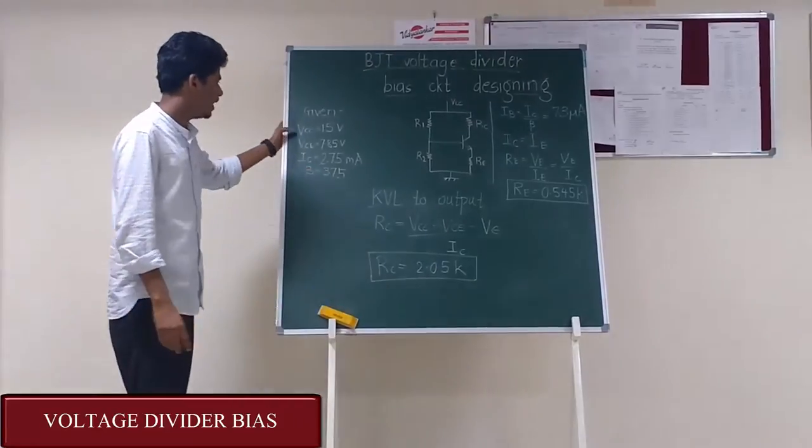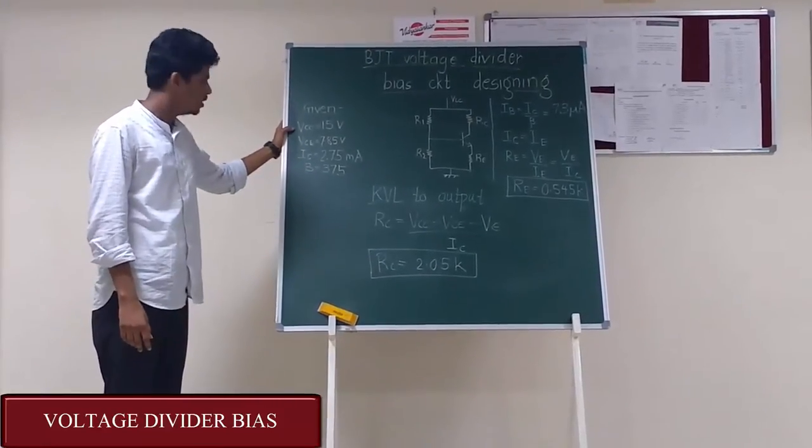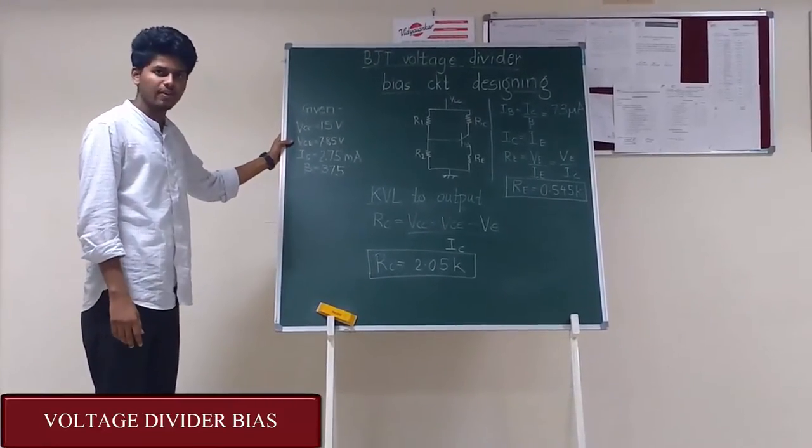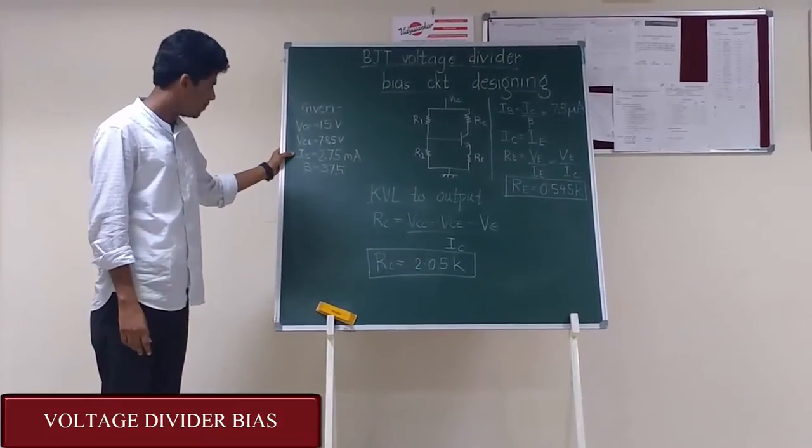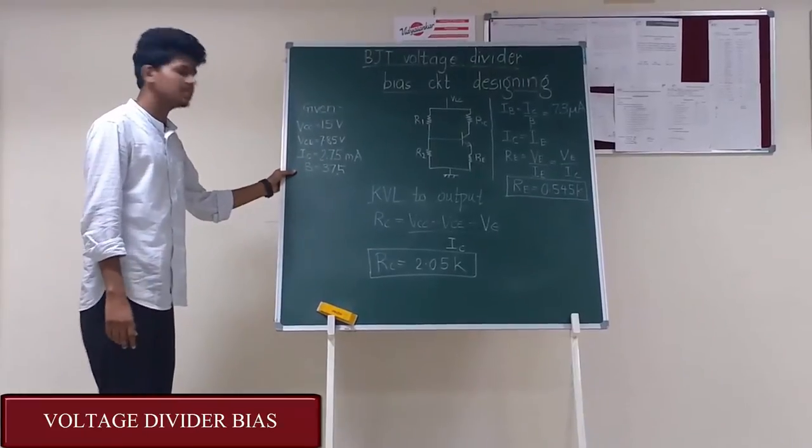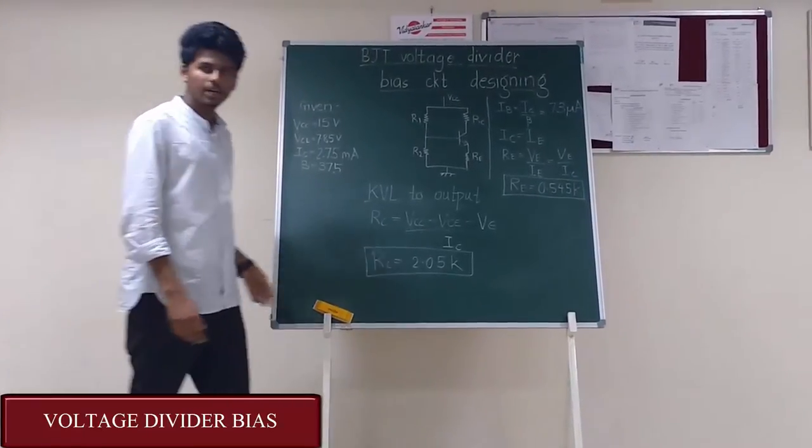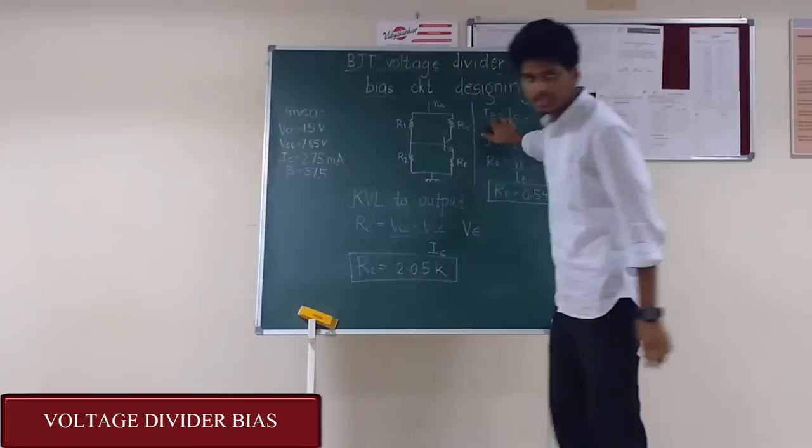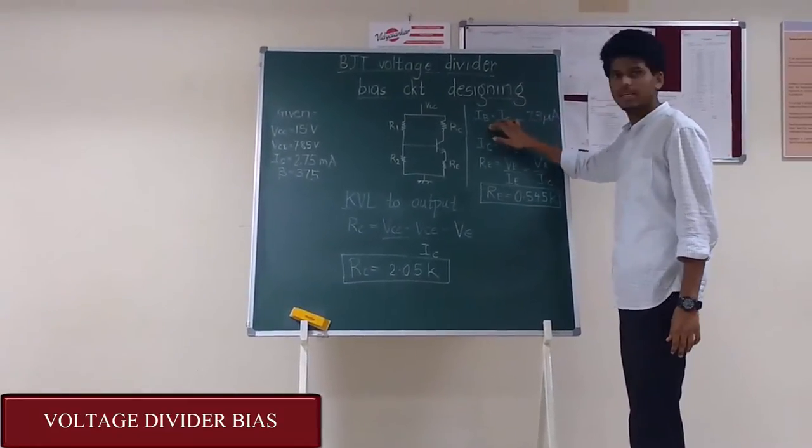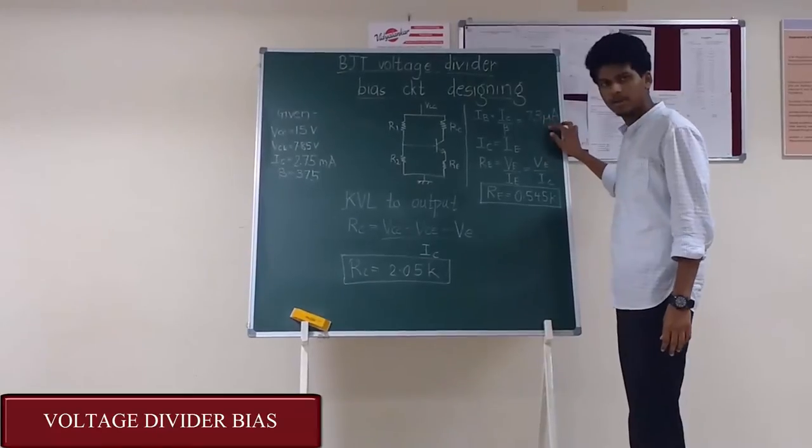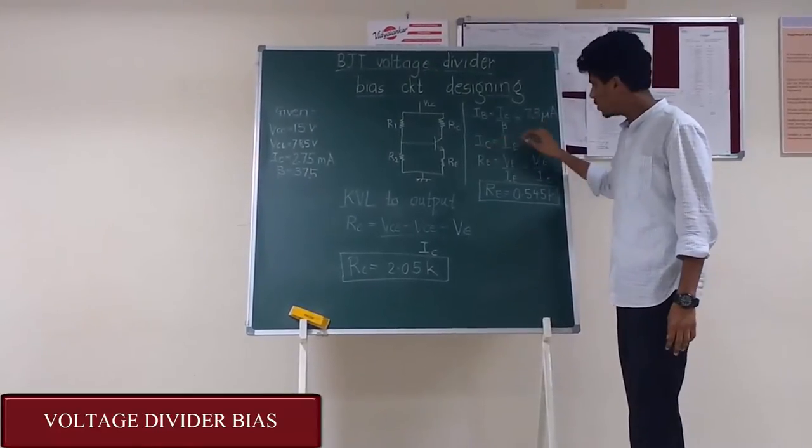The given specifications are VCC = 15 volts, VCE = 7.85 volts, IC = 2.75 milliamps and the beta value of the BJT is 375. Here we know that IB = IC/beta, which gives us IB = 7.3 microamps. IC is equal to IE.